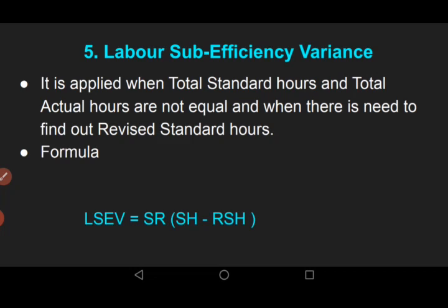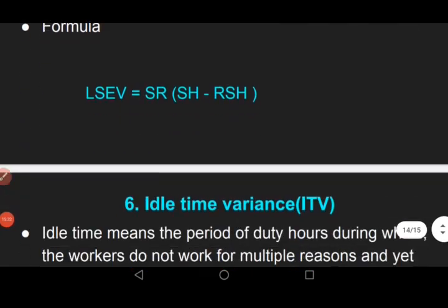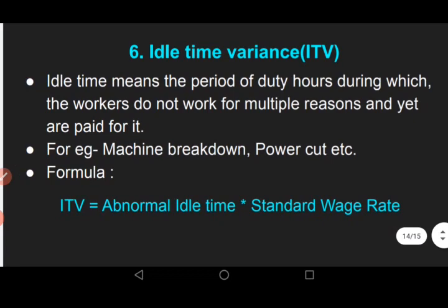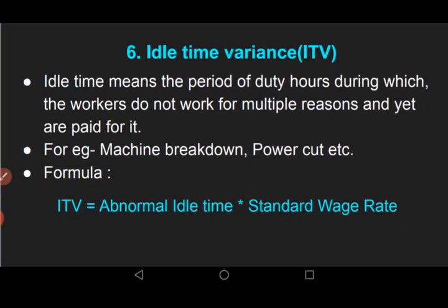Labor sub-efficiency variance is applied when total standard hours and total actual hours are not equal and there is a need to find revised standard hours — exactly as we did in material variance. The formula is: Labor Sub-Efficiency Variance = SR × (Standard Hours − Revised Standard Hours).